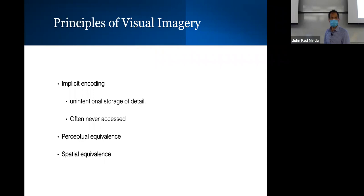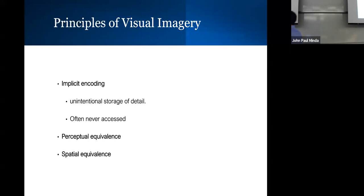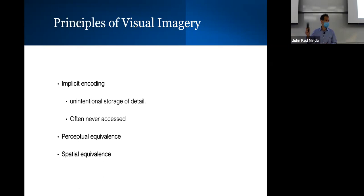That's principle number one: implicitly encoded. Principle number two is perceptual equivalence — it's not exactly perception, but it's equivalent to perception, even at the neural level, which we'll show on a few slides. Finally, there's spatial equivalence: there are spatial details, and it takes you a certain amount of time to imagine scanning from one part of a mental image to another. If I imagine standing in front of my house and someone asks what color is the house across the street, it takes longer because in my mind's eye I have to turn around. I can't automatically reorient my image — I have to rotate it as I would in real time.